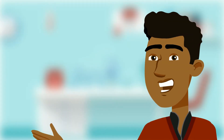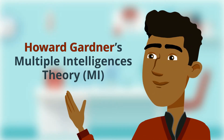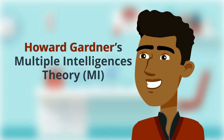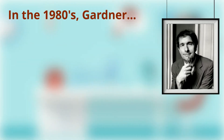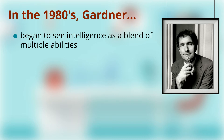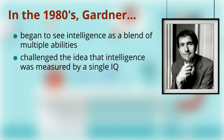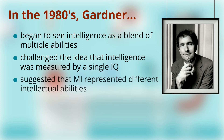Hello, and welcome to today's session on Howard Gardner's Multiple Intelligences Learning Theory. In the 1980s, Gardner began to see intelligence as a blend of multiple abilities rather than one single modality. His theory of multiple intelligences challenged the idea that intelligence was measured by a single IQ measurement. He suggested that multiple intelligences represented different intellectual abilities and that these abilities typified various ways of processing information.